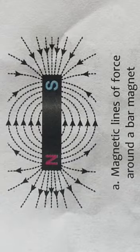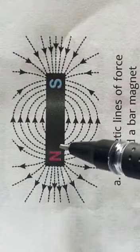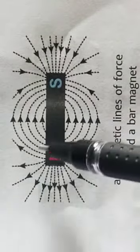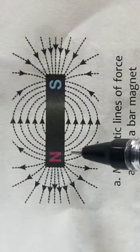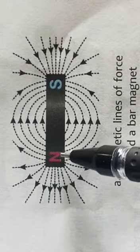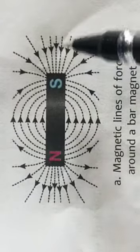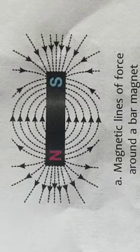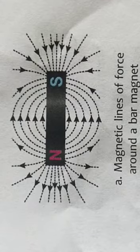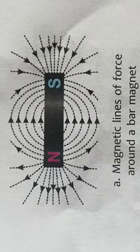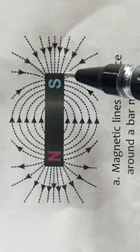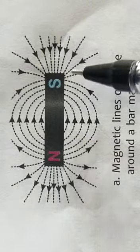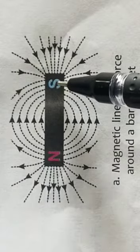Now let us learn about the properties of magnetic lines of force. These are continuous curves which start from the north pole and move toward the south pole. However, inside the magnet the direction is just opposite — inside the magnet the lines start from the south pole and move toward the north pole. But when drawing diagrams, you draw them originating from the north pole and moving toward the south pole.